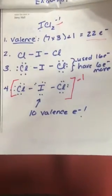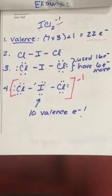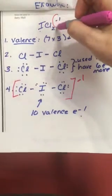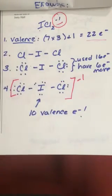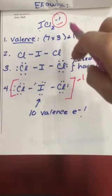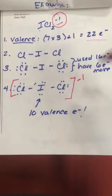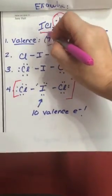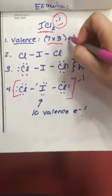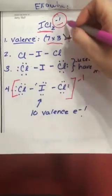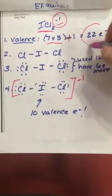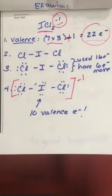All right, so, remember the first step is always to count the number of valence electrons. ICL2 with an overall charge of minus one has 22 valence electrons. I picked this example in part because it's got a charge, and you need to include that charge when you're counting valence electrons. If you have a negative charge, that means it has extra electrons. So, you can see here, seven times three for the three halogens, plus one more valence electron for the negative charge. So, this compound has 22 valence electrons.